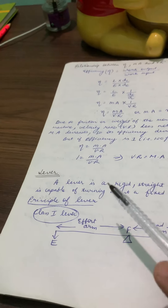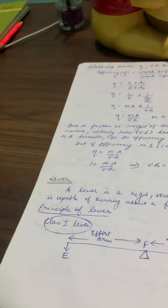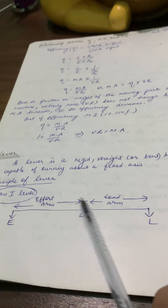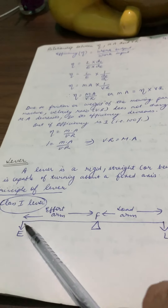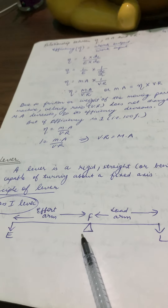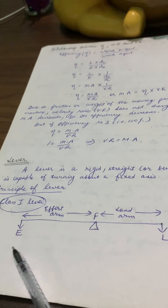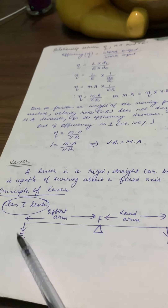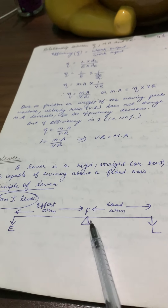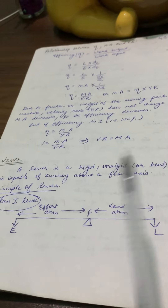Now we are going to study the first class of lever. In a class one lever, the fulcrum is in the middle, and the load and effort are on the sides — that is, on opposite sides of the fulcrum.